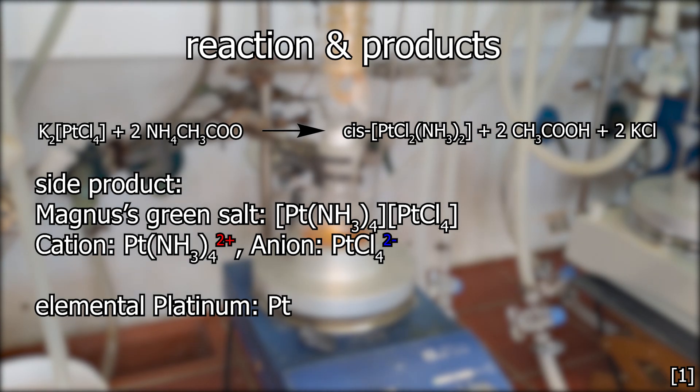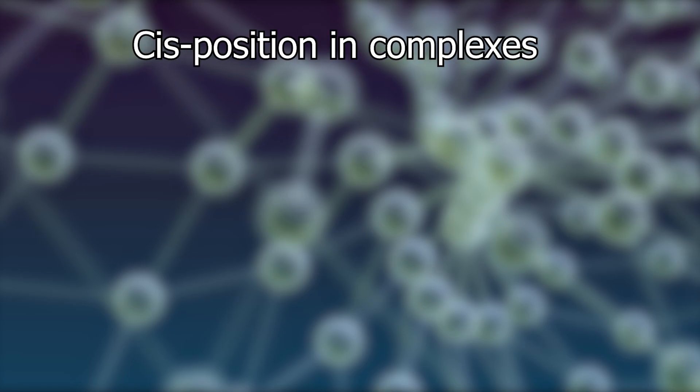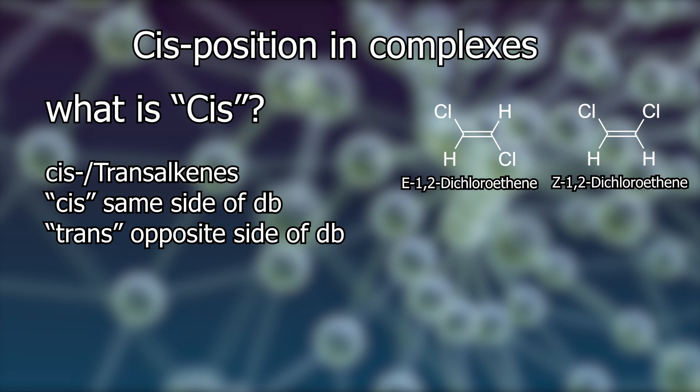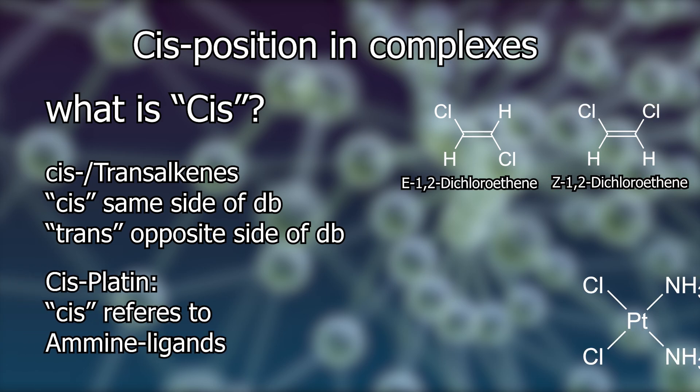Now we can go back to the main topic of this video, the cisplatin. What does cis stand for? Cis describes the spatial arrangement of this compound. You might remember cis- and trans-alkenes from basic organic chemistry. In a cis-alkene, the substituents are on the same side of the double bond. In this case, both amine ligands are on the same side of the platinum complex.